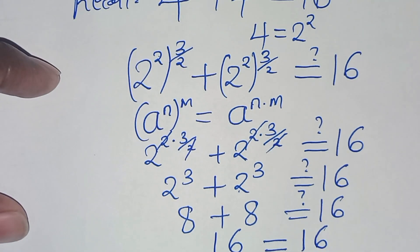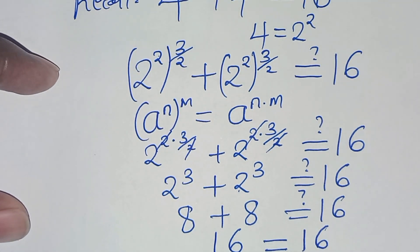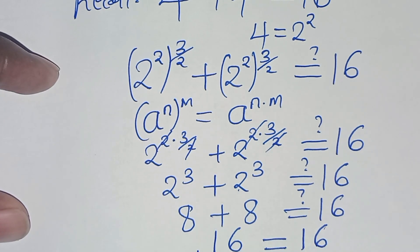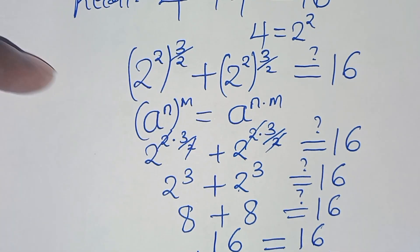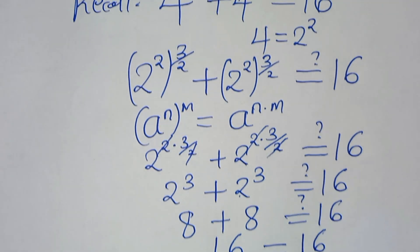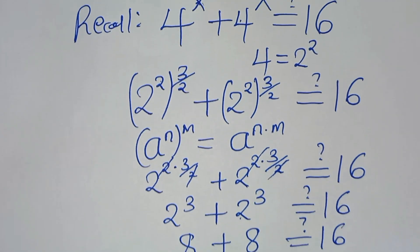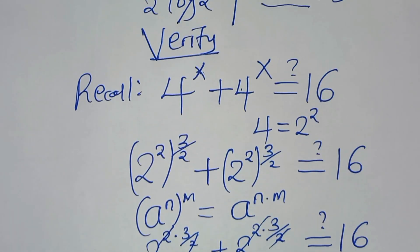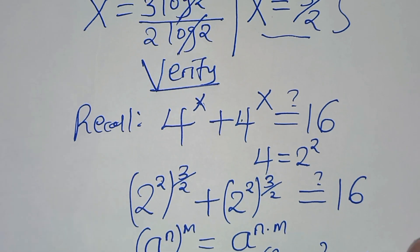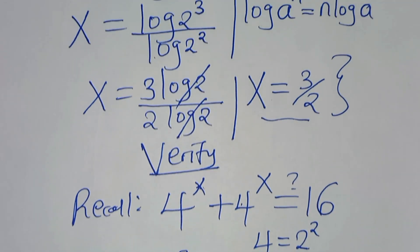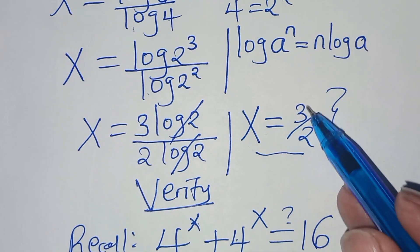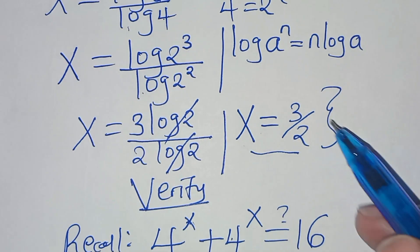The left-hand side equals the right-hand side, confirming that applying both method 1 and method 2 gives the same value of x, which is 3 over 2.